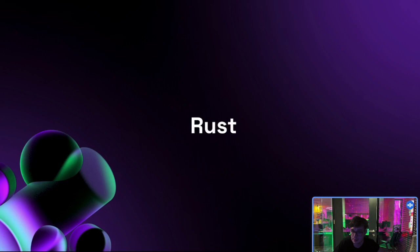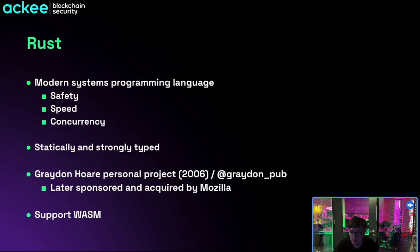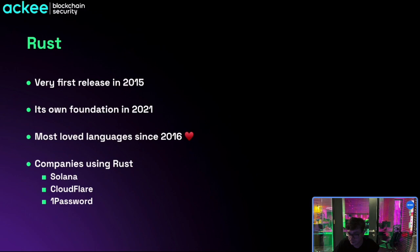Rust is a modern systems programming language that prioritizes safety, speed, and concurrency. It is a statically and strongly typed programming language. It was founded as a personal project in 2006, sponsored by the Mozilla Foundation in 2009, and is maintained by Mozilla to this day. It supports WebAssembly and has a lot of popularity in systems programming, game engine development, and the blockchain ecosystem — including Solana and new Layer 1 blockchains like Aptos and Sui.